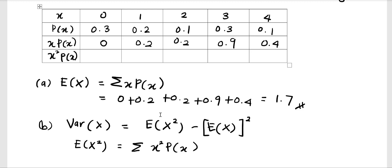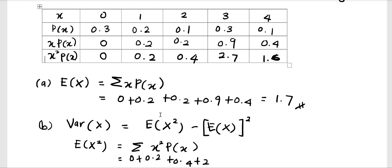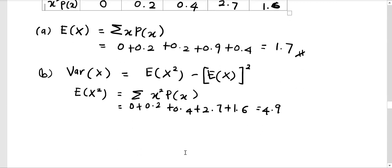Adding a row for x² times probability of x: zero squared times 0.3 gives 0; one squared times 0.2 gives 0.2; two squared, which is four, times 0.1 gives 0.4; three squared, which is nine, times 0.3 gives 2.7; and four squared, which is sixteen, times 0.1 gives 1.6. The summation is 0 + 0.2 + 0.4 + 2.7 + 1.6, which equals 4.9.